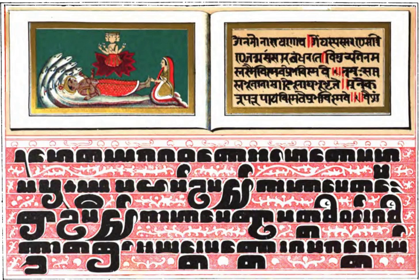A slightly freer translation by Acharya Buddharakkhita reads: 'Mind precedes all mental states. Mind is their chief; they are all mind-wrought. If with an impure mind a person speaks or acts, suffering follows him like the wheel that follows the foot of the ox.'